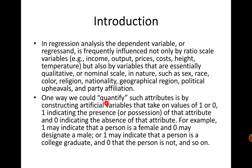Such qualitative variables can be represented by dummy variables. One way to quantify such attributes is by constructing artificial variables that take on values 1 or 0, where 1 indicates the presence of that attribute and 0 indicates its absence. For example, to represent gender, the dummy variable equals 1 if the person is female and 0 if the person is male. For education, a dummy equals 1 if the person has attained graduation and 0 if not.